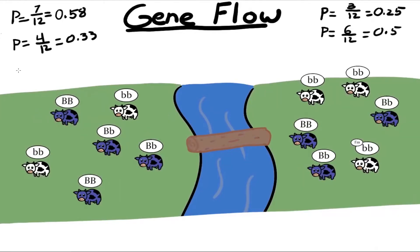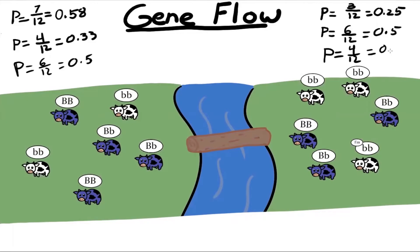Let's say another migration event happens where two more cows migrate between the two populations. Looking at the new allele frequencies after the second migration, we have six alleles out of 12 in the first population, so 0.5, and then four alleles out of 12 in the second population, or 0.33. You might notice that these numbers are oscillating around a certain number, and if we kept doing this we would see this oscillation back and forth.